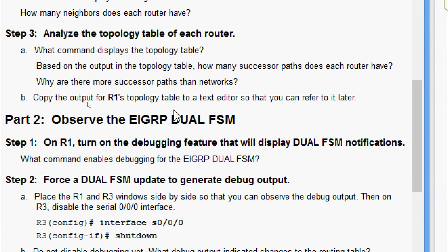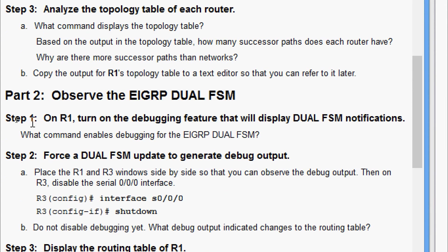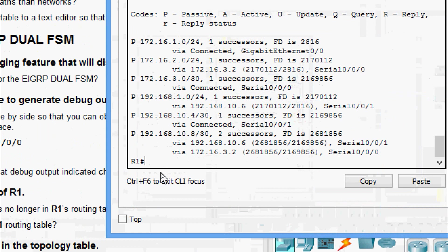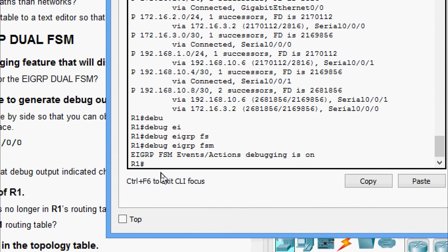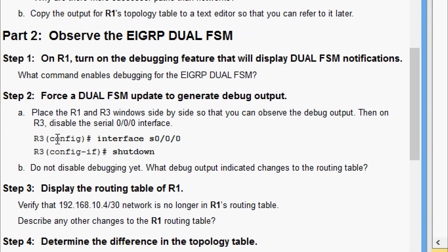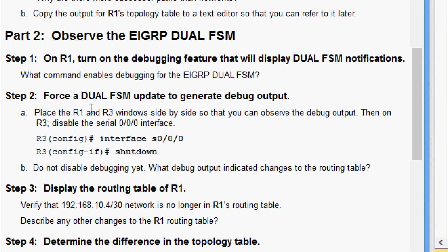In part two, observe the EIGRP DUAL FSM. In step one, on R1, enable the debugging feature that will display DUAL FSM notifications. The command that enables debugging for the EIGRP DUAL FSM is 'debug eigrp fsm'. Coming to R1, we run 'debug eigrp fsm' and we can see the message: 'EIGRP FSM events/actions debugging is on'.